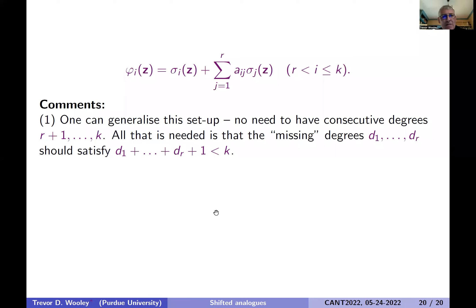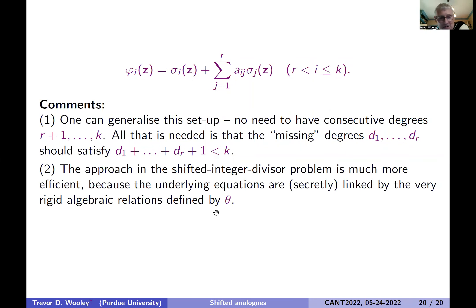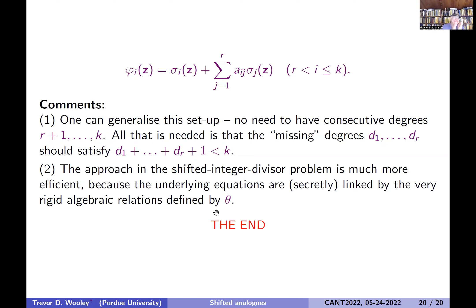In conclusion: you can generalize all of this — you don't need consecutive small degrees, as long as the sum of omitted degrees isn't too large. The reason the shifted integer divisor problem does so much better is the rigidity imposed by the algebraic relations. Thank you for your attention.